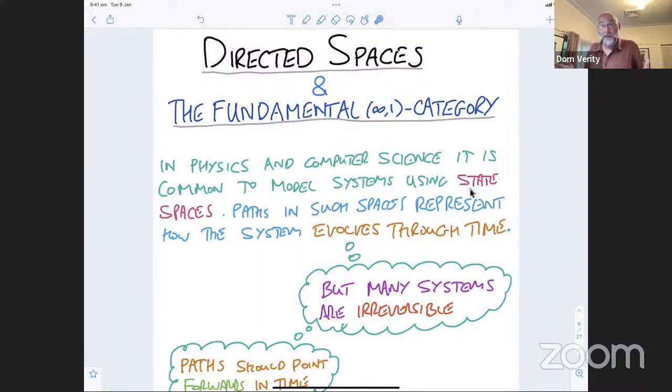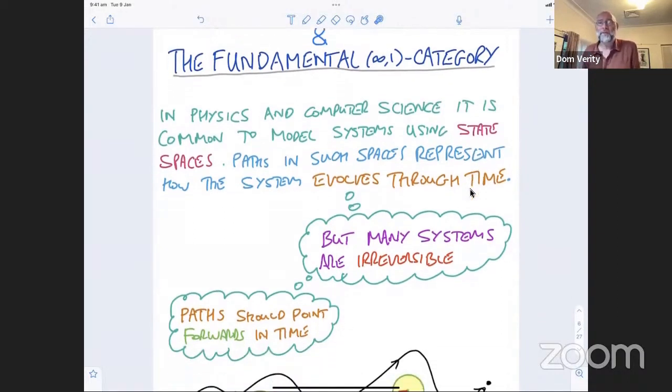So we might take our state space and start asking questions about what paths do they have and how are those paths related. But one thing that we noticed fairly early on is that many of the systems that we're interested in are actually irreversible. So it doesn't make sense to transit along paths in two different directions. Because, for example, paths should point forward through time. So many systems evolve through time and they only evolve in one direction through time.